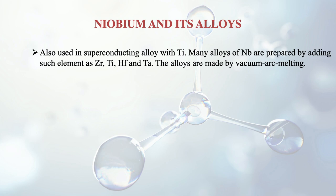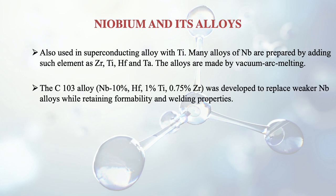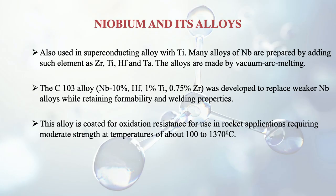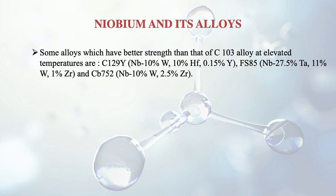These alloys are made by the vacuum arc melting process. One special alloy is C103, with composition of 10% hafnium, 1% titanium, 0.75% and a little zirconium. It is used to replace weaker Nb alloys because it gives better formability and welding properties. This alloy is coated for oxidation resistance for use in rocket applications requiring moderate strength at temperatures of about 1000 to 1370 degrees centigrade. Some alloys have better strength than C103 at elevated temperatures.